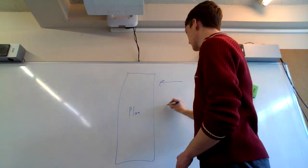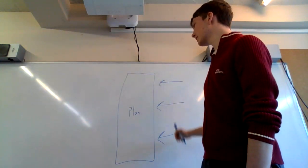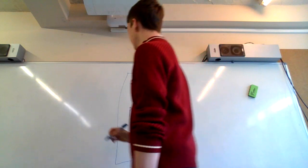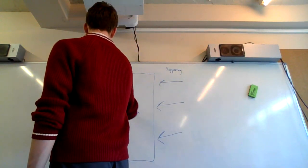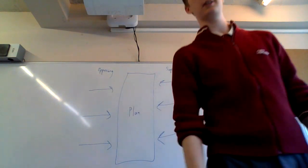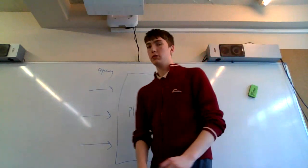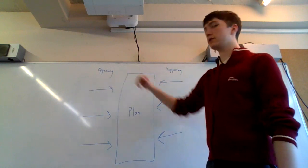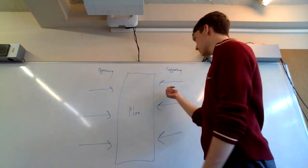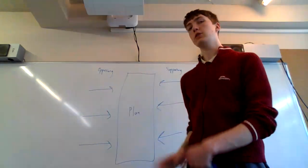You draw arrows on the right side for supporting forces — anything that helps make this plan work. On the left, you put the opposing forces — things that go against your plan. For example, if you want to open a new store in New York City, supporting forces might be a large market of people to buy your products and good access to investors. Opposing forces might be really expensive rent, and expensive shipment costs from your base to New York.